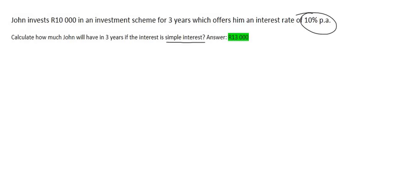What PA stands for is per annum, which means per year. So let's see what they mean by that. John invests his money in some type of bank or investment scheme, and they will reward him for keeping their money in the bank, and so they will give him 10% per year. 10% of what? Well, 10% of the amount of money that he has.